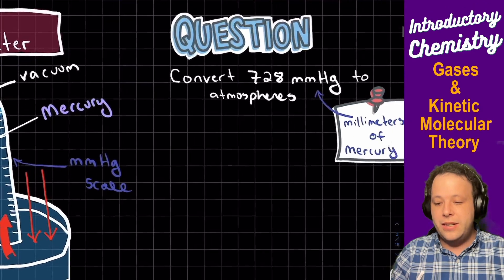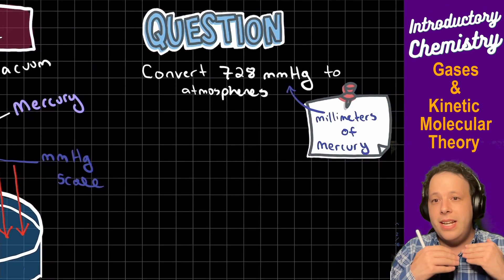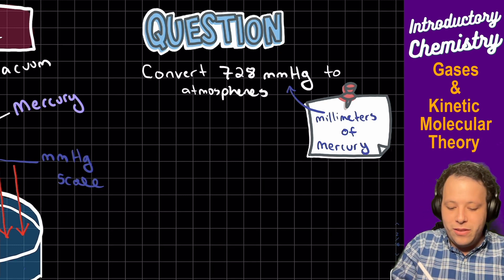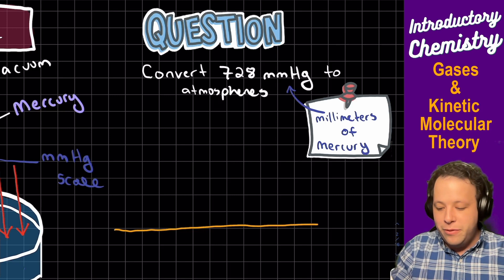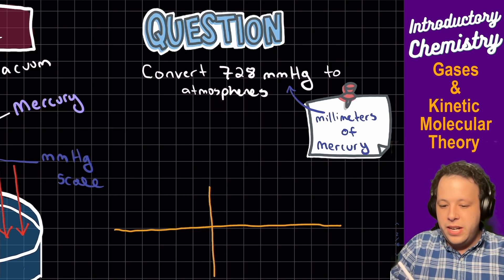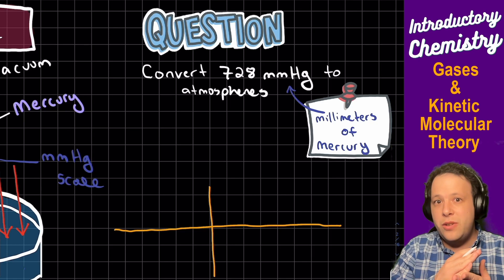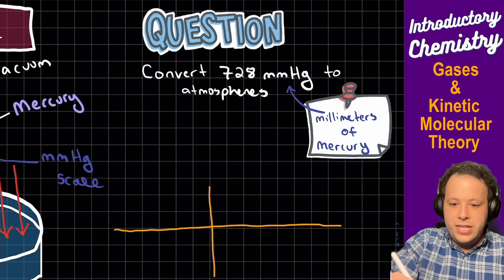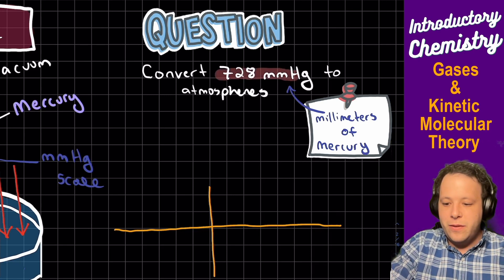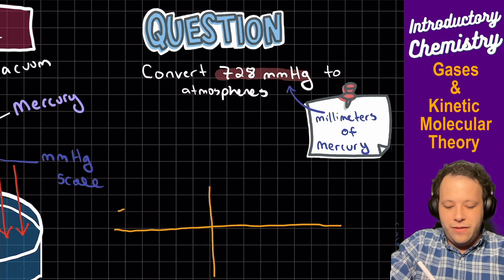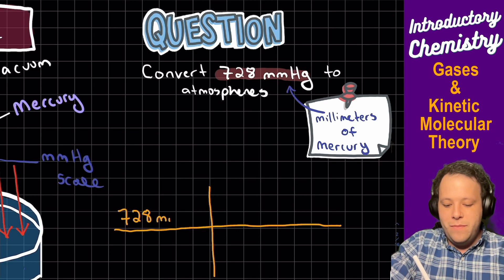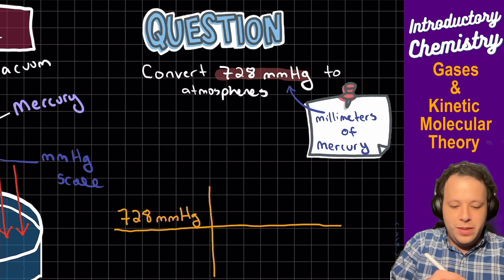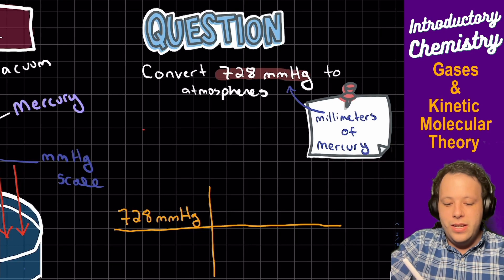So this is something that's a basic dimensional analysis conversion. When you are going through these you're going to set up just a little T-table for yourself. So what we're given is it asks us to convert 728 millimeters of mercury to atmospheres. So what we're going to do is we're going to write down our given piece of information and we're going to illustrate that for ourselves. So we have 728 millimeters of mercury, and how do we convert that to atmospheres?